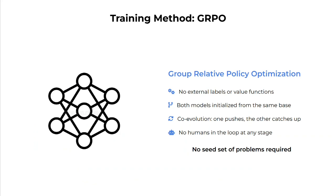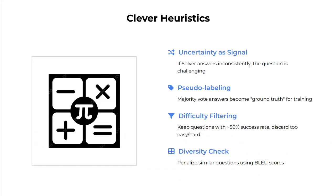A training method called GRPO — Group Relative Policy Optimization — is used, which doesn't require any sort of labeling. I'm not jumping into much detail of this reinforcement learning approach for now.